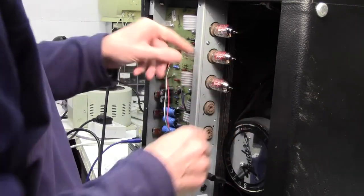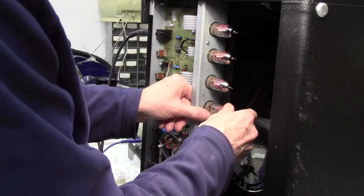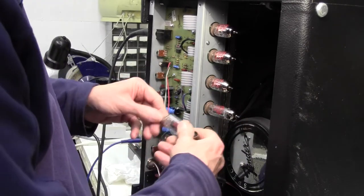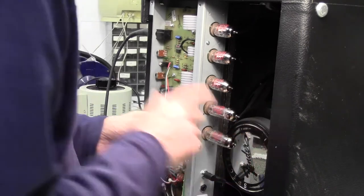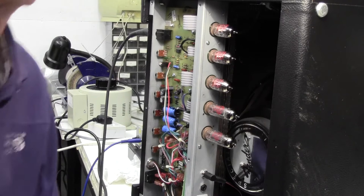There's the third preamp valve. The board's not very well supported because I've got most of the screws out, so I just put my hand behind there to support that board. Now we'll pop in the power tubes. Again, I'll support the board because I've only got a couple of screws in there. Righty ho, that's the valves in.